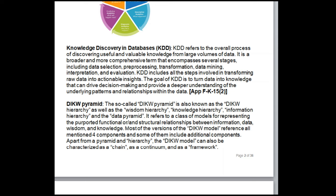The data mining process involves several steps: 1. Data collection — gathering relevant and potentially useful data from various sources. 2. Data pre-processing — cleaning, transforming, and preparing the data for analysis, including handling missing values, dealing with outliers, and ensuring data quality. 3. Exploratory data analysis — exploring the data visually and statistically to gain a better understanding of its characteristics and relationships. 4. Feature selection/engineering — choosing or creating the most relevant and informative features (variables) for the analysis.